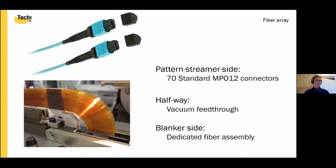The intermediate is the fiber optics. The fiber optics are used to bring the data from the 19-inch cabinet into the vacuum. We use standard MPO 12 connectors on the pattern streamer side and a dedicated fiber assembly on the blanker side. As the blanker operates in vacuum, a vacuum feed-through is also part of this halfway.